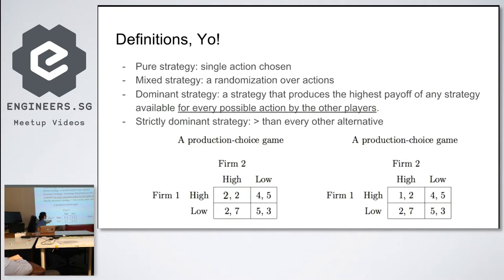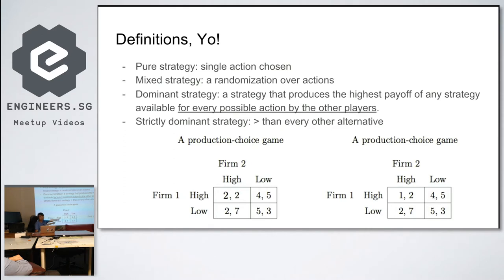Let's look at the production choice game example. Firm one gets to choose high or low production. If firm one chooses high, the firm gets two and four as payoffs respectively. If firm one chooses low, it gets two and five respectively. So which would you choose? Low — exactly. Low is a dominant strategy for firm one.